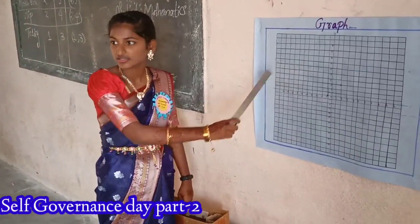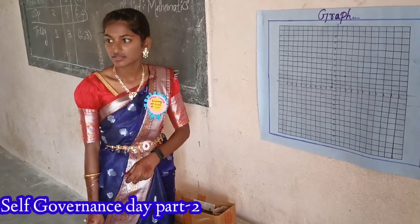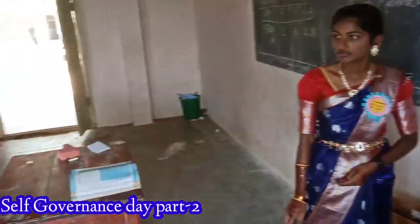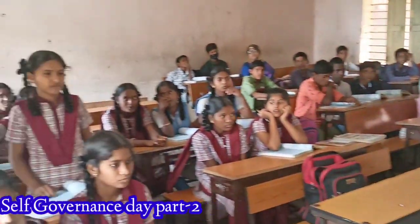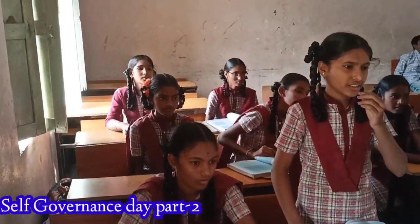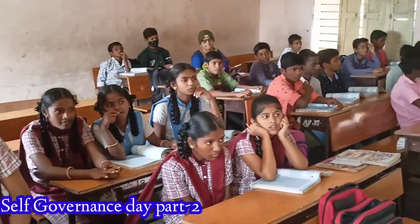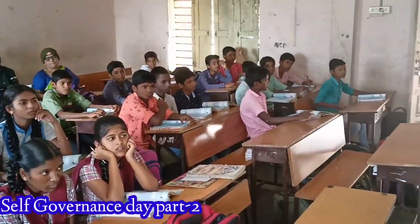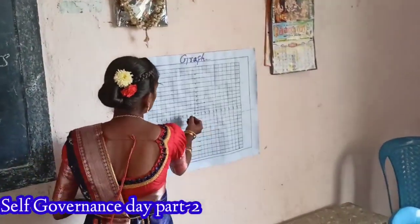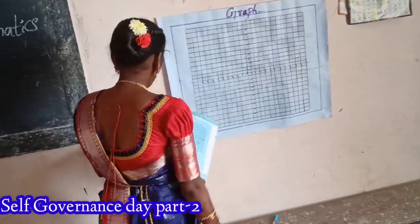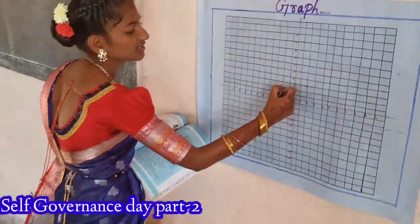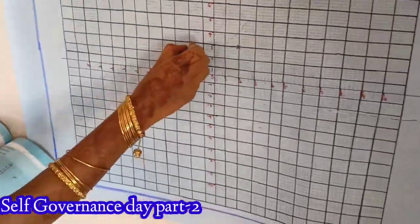This is which quadrant? Negative. Quadrant number — it is quadrant two. Quadrant one, quadrant two, quadrant three, quadrant four. On the x-axis, where is minus two? Here. Where is three on the y-axis? It is here. We should plot here.